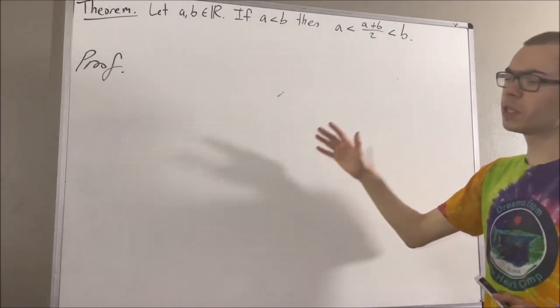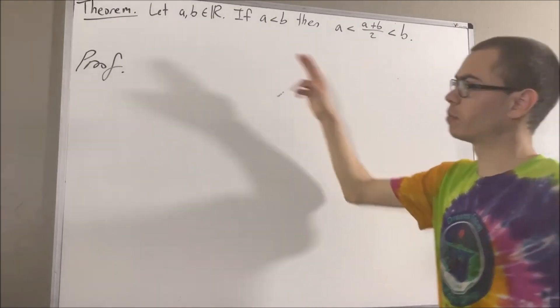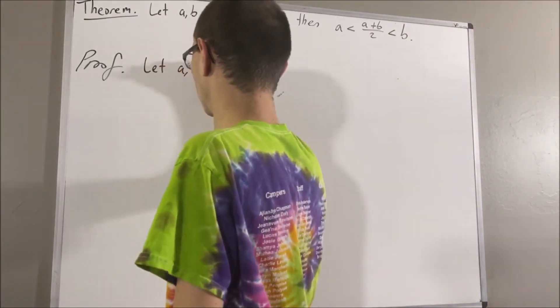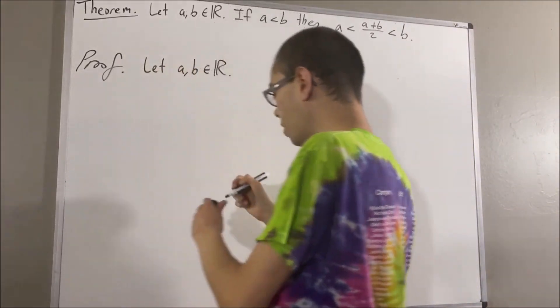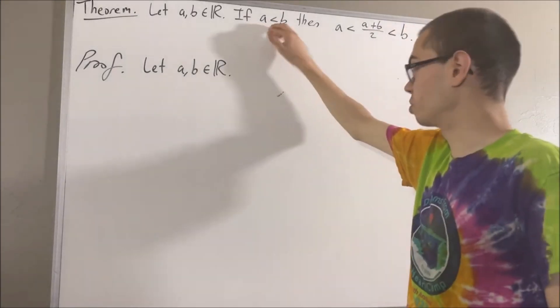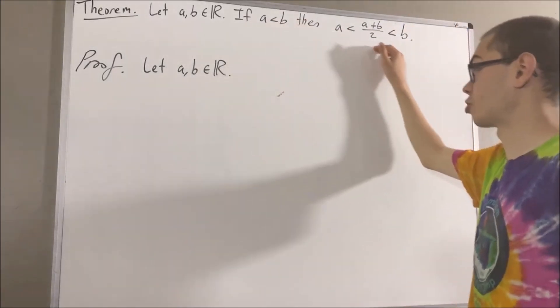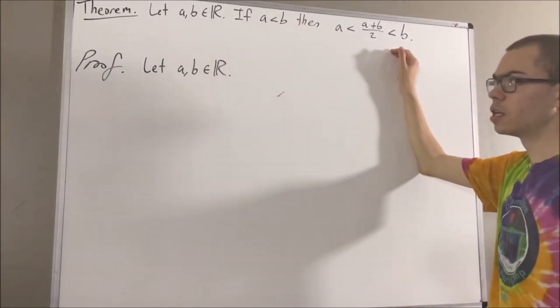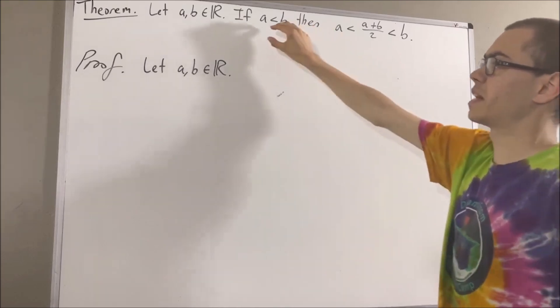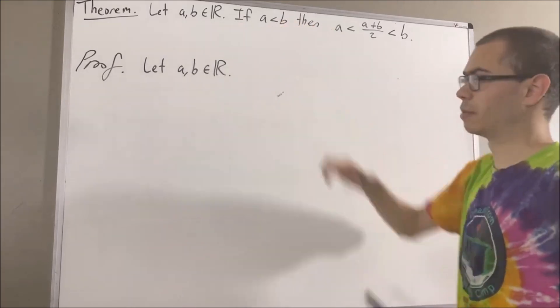Now to start with the proof, let's give ourselves two real numbers a and b. From here, we want to prove if this is true, then this is true. So to prove that, let's suppose that a is less than b.